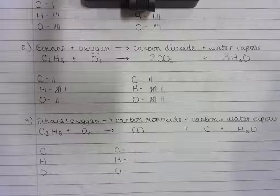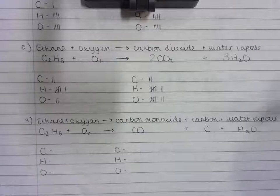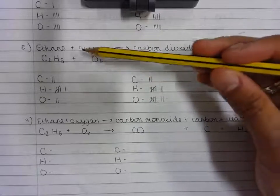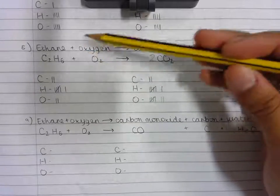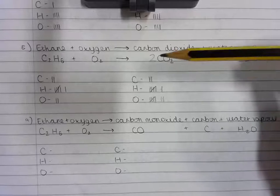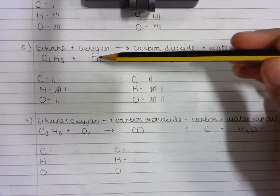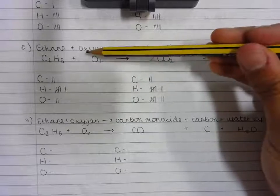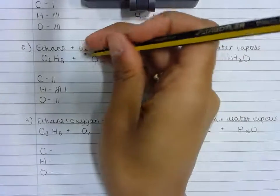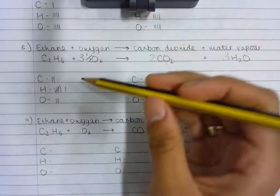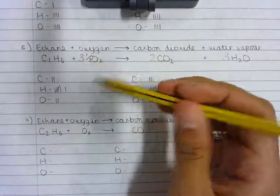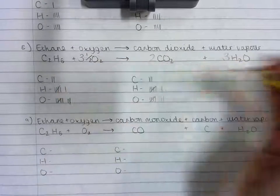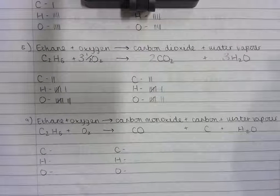It's still not balanced because I have got two oxygen atoms on the reactant side and seven on the product side. What I recommend is to put a number with a fraction in front of the substance that has the atoms you need to increase. So if there are seven oxygen atoms needed, I'll put three and a half in front of the O₂ — three and a half times two equals seven — counting one, two, three, four, five, six, seven oxygen atoms on the reactant side.